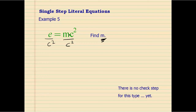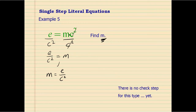The C squared terms can be simplified — both top and bottom can be divided by C squared, giving 1. On the right side you have M, and on the left side you have E divided by C squared. To make it look nicer, you can write M equals E over C squared. The symmetric property allows us to rewrite from one form to the other — that would be the symmetric property.